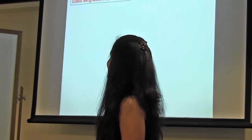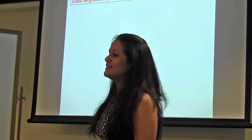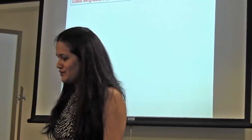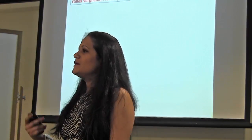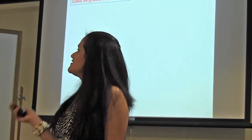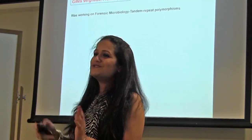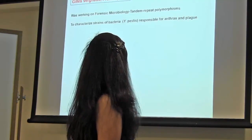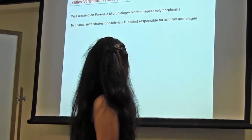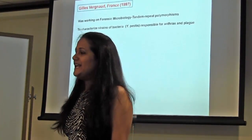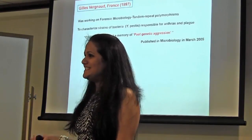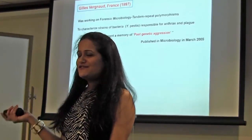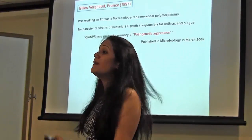Meanwhile, in France, Gil Pourcel is actually a human geneticist who wanted to work on clinical pathological conditions in humans. But at the time, France's defense ministry told him to shift his focus from human genetics to forensic microbiology due to news about Saddam Hussein's regime developing biological weapons. He looked at tandem repeat polymorphisms in strains of Yersinia pestis — mainly involved in anthrax and plague infections. While doing that, he also observed these CRISPR loci and very poetically said in his paper that 'CRISPR may present as a memory of past genetic aggression.' He managed to publish his work in the Journal of Microbiology in March 2005.